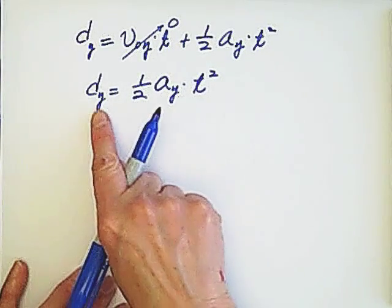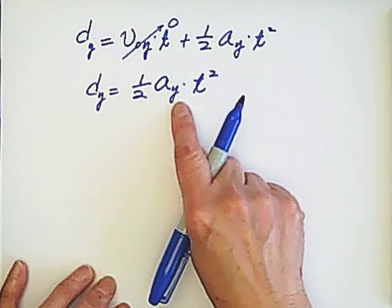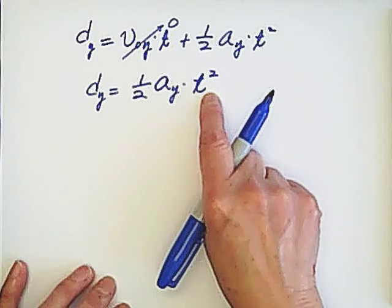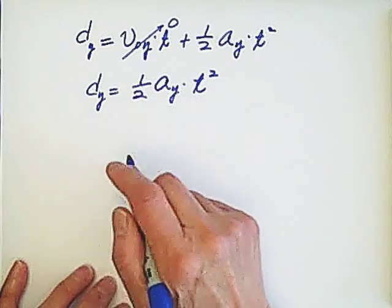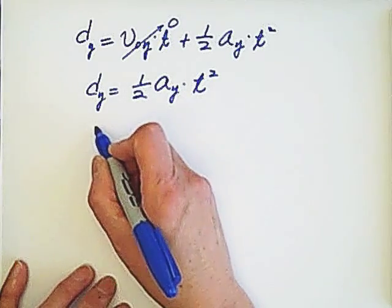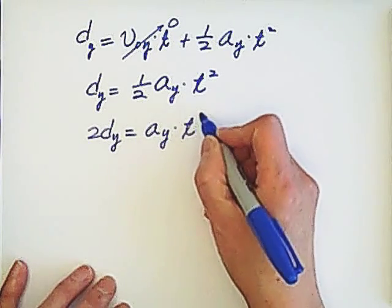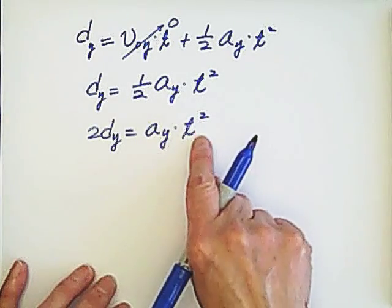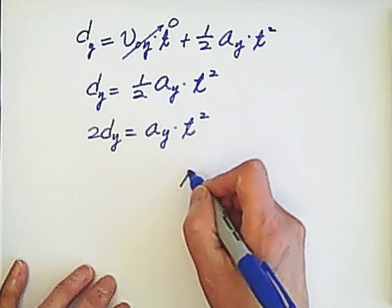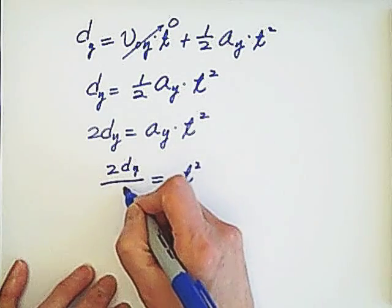Because we already know dy is 6 meter, ay is 9.8, so we can manipulate the formula to find t. To manipulate the formula we need to multiply 2 for both sides. So we got 2dy equals ay times t squared. And we're looking for t so divide the ay for both sides. We have t squared equals 2dy over ay.